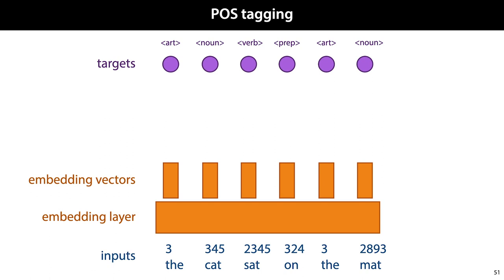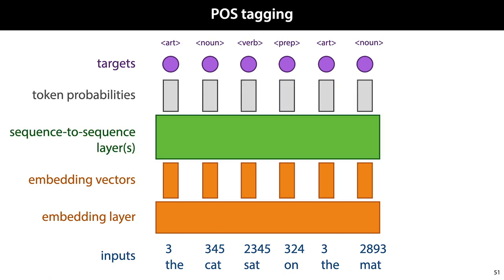Now that we have a sequence of embedding vectors, we can feed this to a stack of sequence-to-sequence layers, which culminate in a sequence of vectors with as many elements as we have part-of-speech tags.